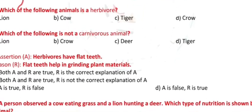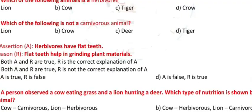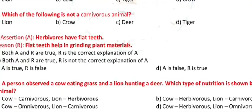Question 5: Which of the following animals is a herbivore? a) Lion, b) Cow, c) Tiger, d) Crow.